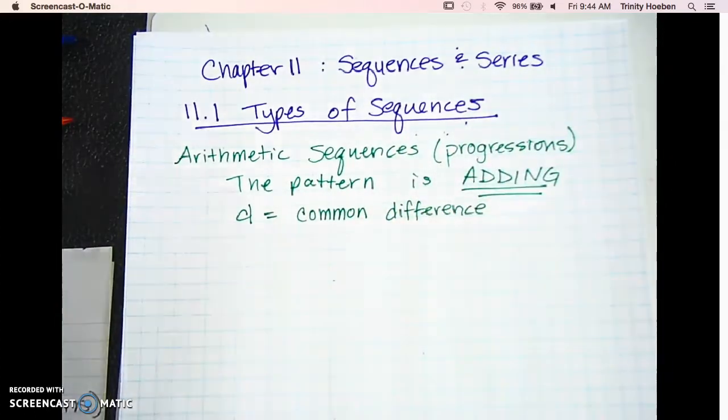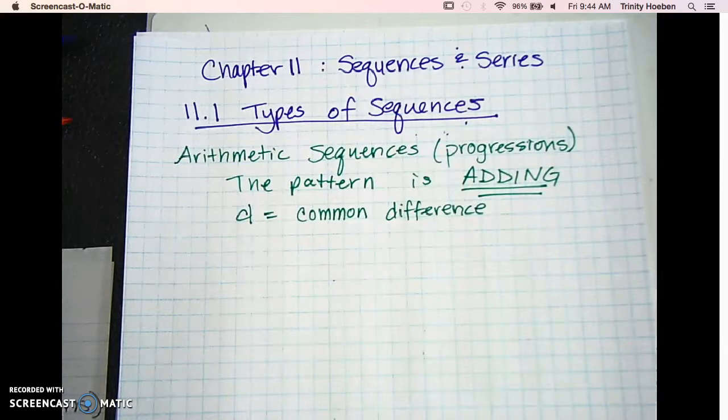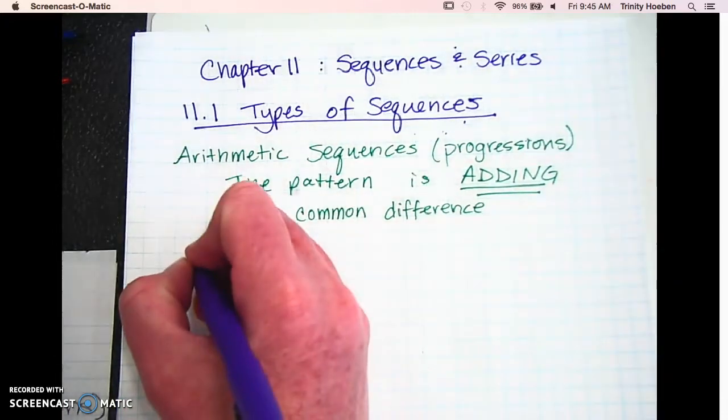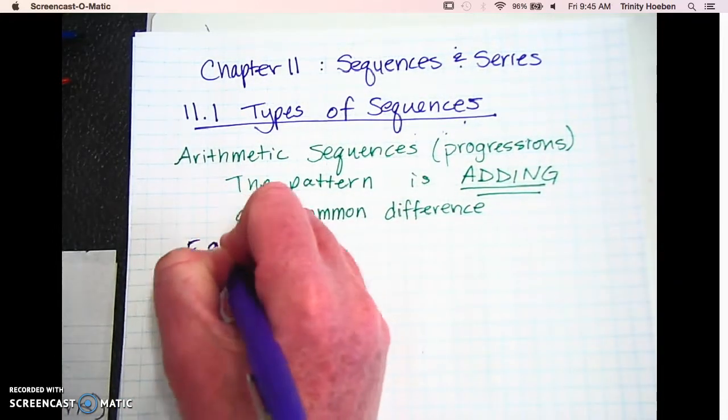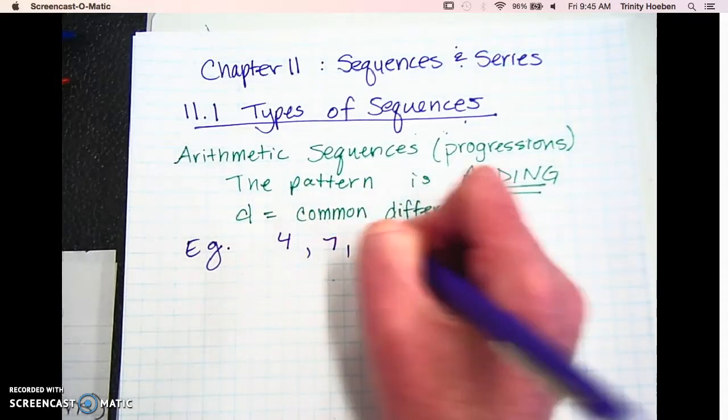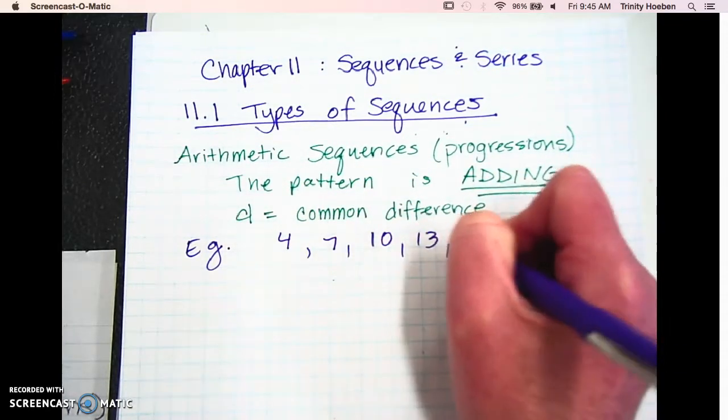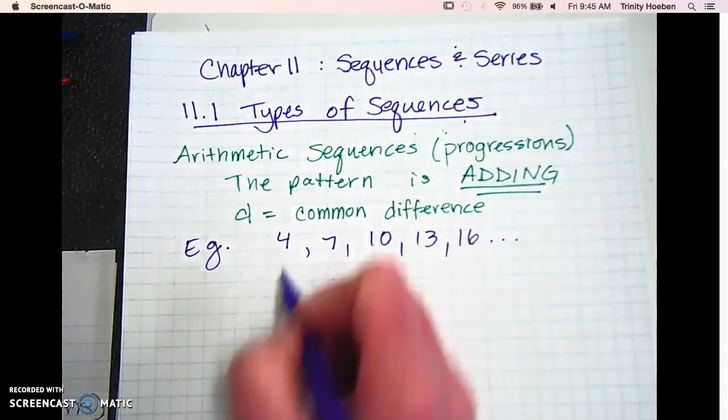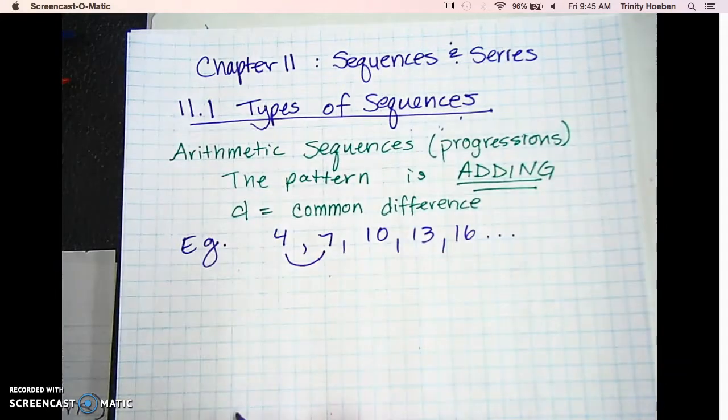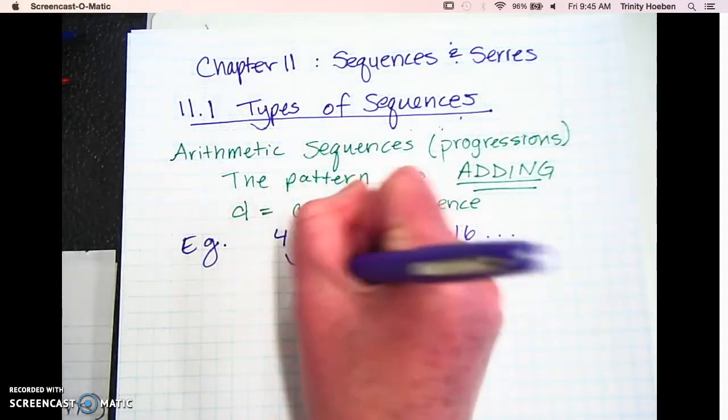Right? Because adding and subtracting are inverse operations of each other. So, for example, you might have 4, 7, 10, 13, 16, dot dot dot. You're going to notice that right here, you have a difference of 3.